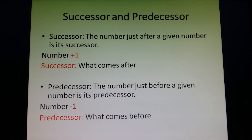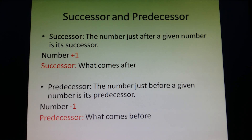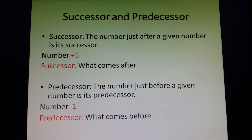As previously you have studied what comes after or what comes before. Successor is the new way of saying what comes after — if we add 1 to any number, we get a successor of that number. Predecessor is the number just before a given number. If we subtract 1 from any number, we get its predecessor.